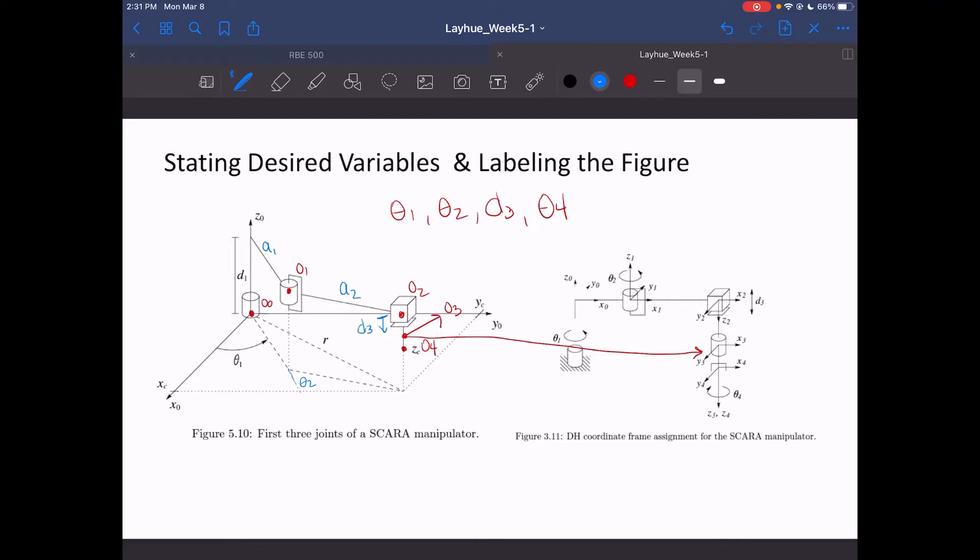And lastly, we have theta4, which is just a rotation of that revolute joint at frame 3 that affects the orientation of the end effector. So we can just do that as a rotation of theta4. Now that we have labeled all of our desired variables and link lengths, we can begin finding our joint variables.